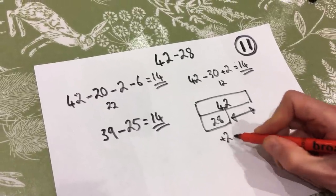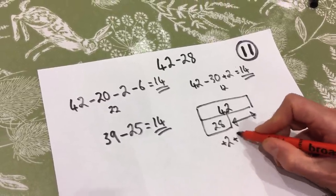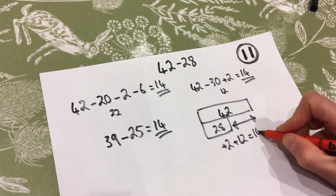I generally do that by adding. So I'll just think, well, add the two, that gets me to 30 and add the 12. So that gets me to 14.